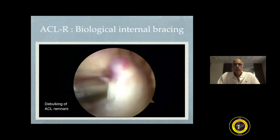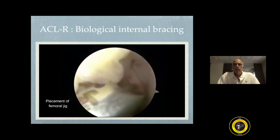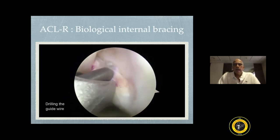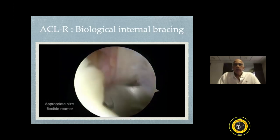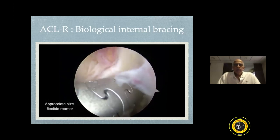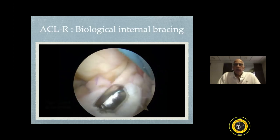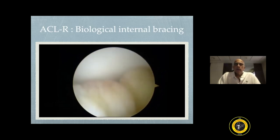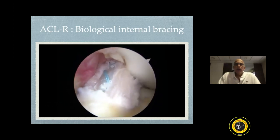This is a video which shows how you can do biological internal bracing or a completely biologic ACL reconstruction. A flexible reamer is being used here to identify and drill the femoral tunnel — you can see that a majority of the soft tissue has been preserved. Once the femoral tunnel has been drilled with the appropriate size drill, the tibial tunnel is then drilled at the tibial footprint. The loop is retrieved from the tibial footprint and the graft is passed. This is the final appearance, which shows that the fat pad has been preserved and the ACL graft is at the right anatomic site.